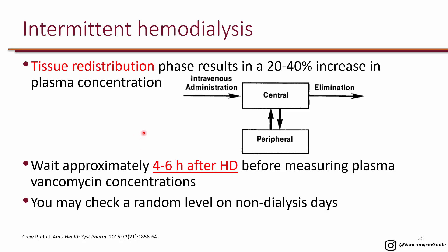This goes back to the two-compartment pharmacokinetic model of vancomycin. Because of the tissue redistribution phase, it results in a 20 to 40 percent increase in plasma concentration. When vancomycin is administered, a good portion of it goes into the peripheral tissue, and the level we measure is actually from the central compartment, which is the circulation.